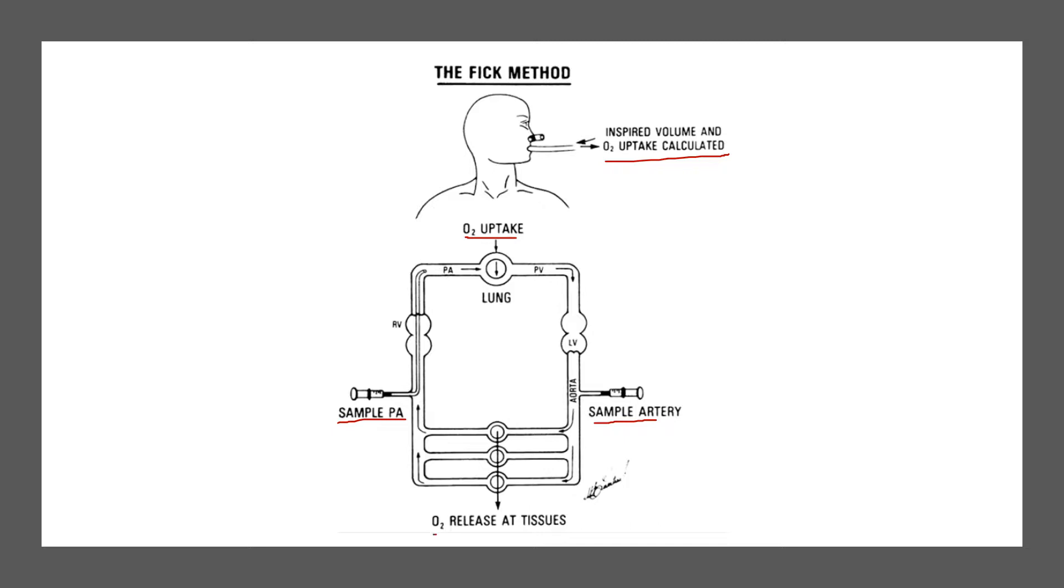Then we have some of the O2 released at the tissue based on the metabolic demand required. After that metabolic demand, we have the post-artery oxygen, which gives us a differential between the O2 that was taken in and the O2 that is expired.